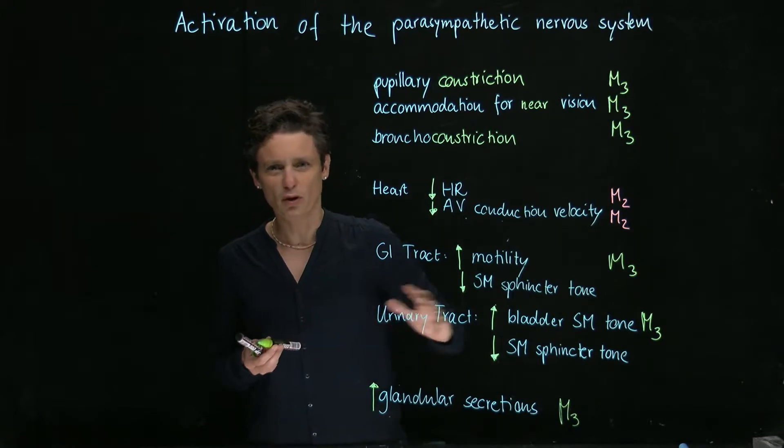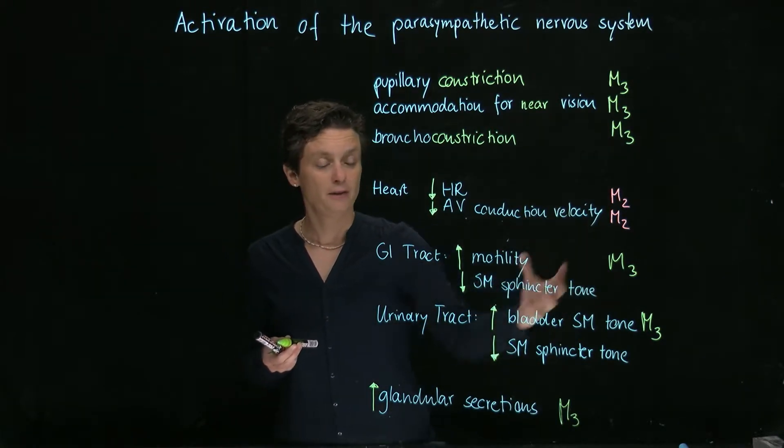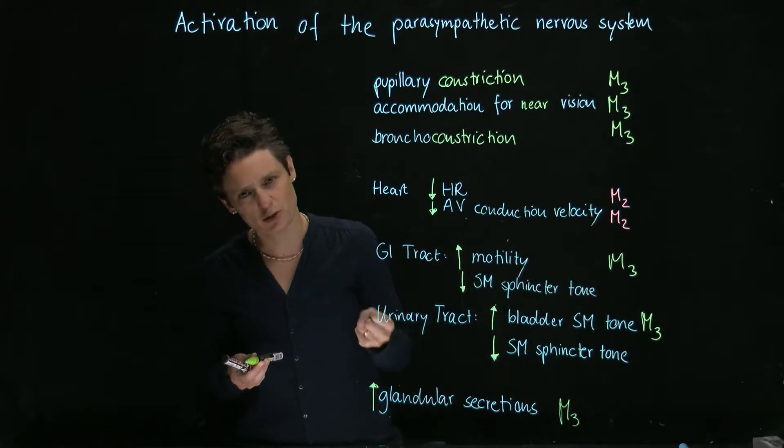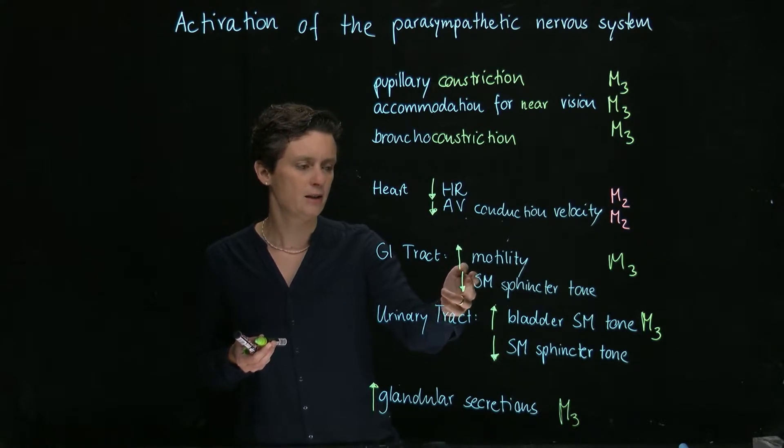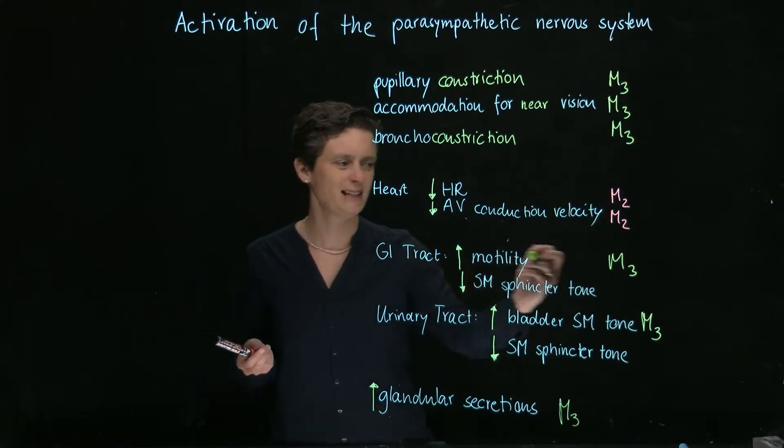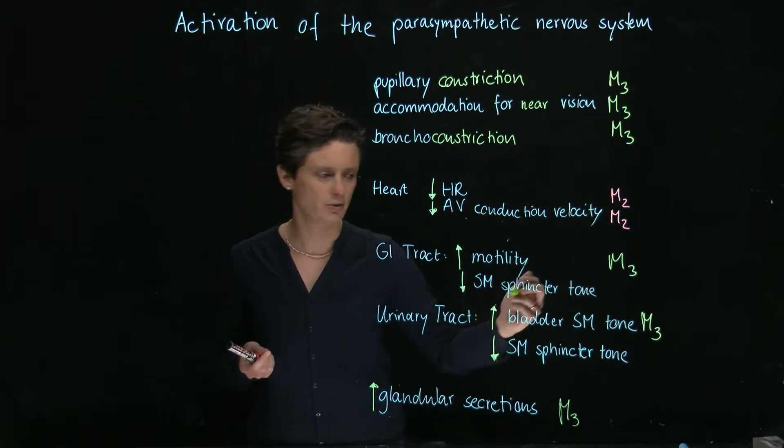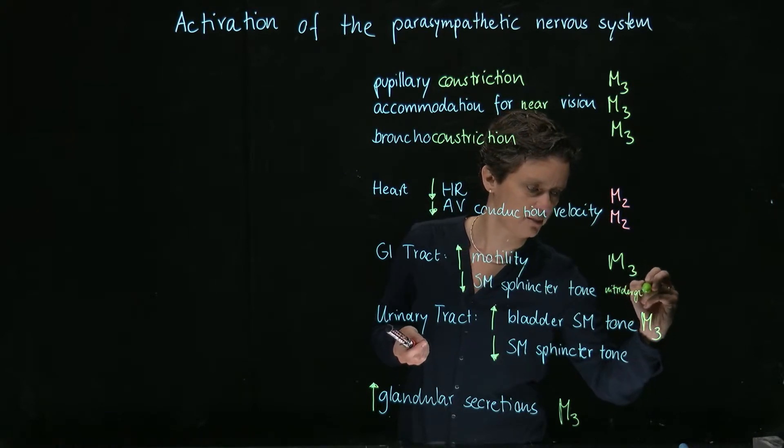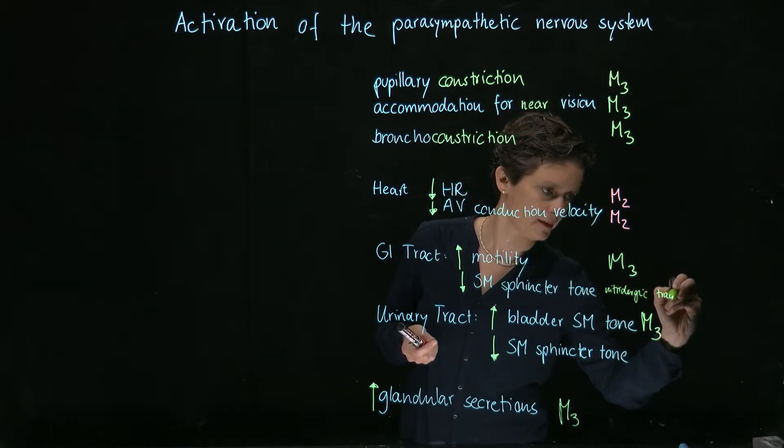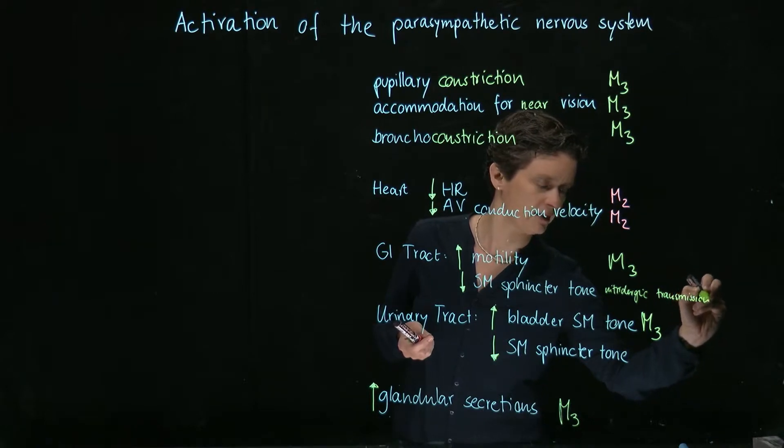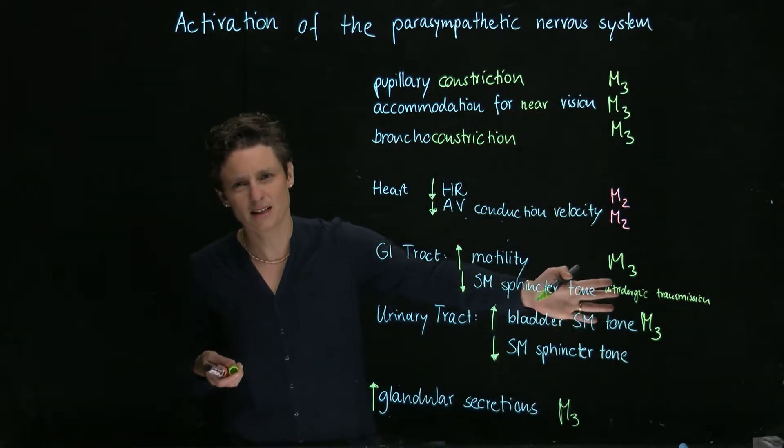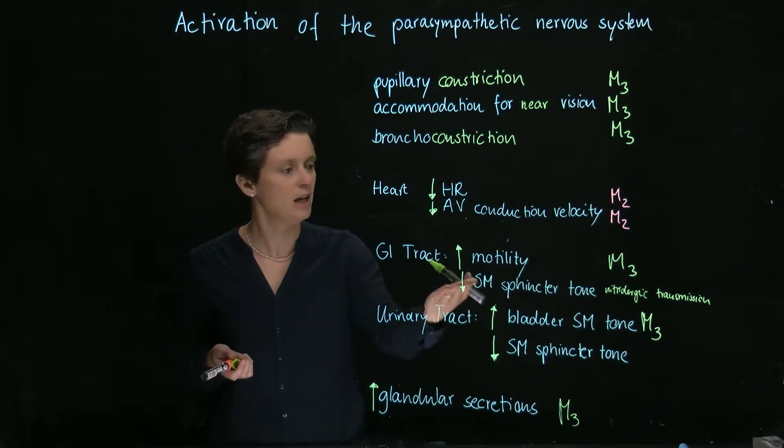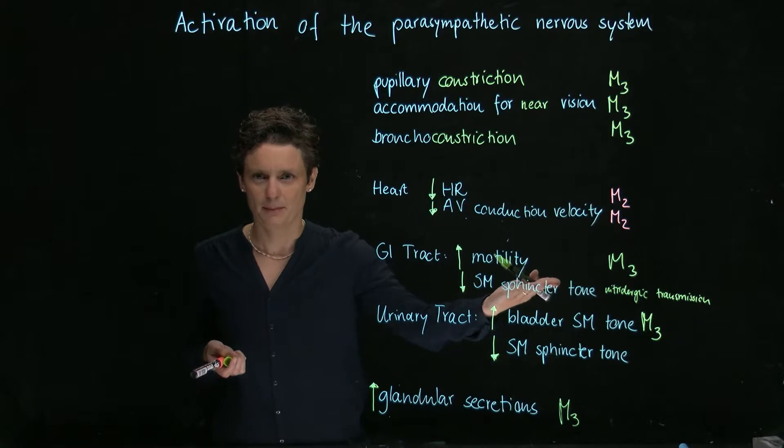The only small exceptions are the sphincters. If you know that smooth muscles, once they're stimulated by M3 receptor, they're going to constrict. So we said here that the smooth muscle sphincter should actually relax. So this is not mediated by a muscarinic receptor. This is mediated by nitridergic transmission. So nitric oxide plays a role here. You should just realize that M3 always leads to smooth muscle contraction, so this can't be mediated by M3.